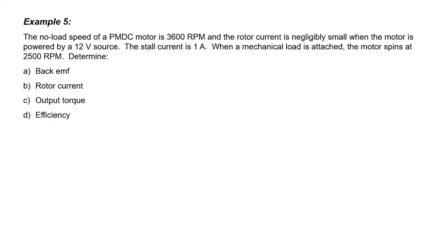In the last example, we were given the stall current, that is the current that a motor drew when it barely was not able to turn. In this example, we're also given the stall current, and we're told that the no-load speed of a DC motor is 3,600 RPMs. There's a linear relationship between speed and torque in a motor. Let's start off by drawing that relationship.